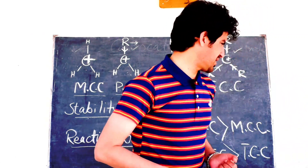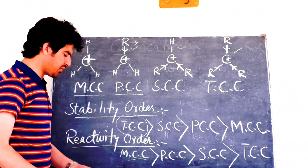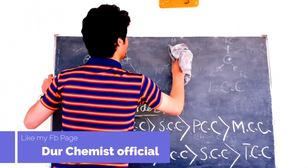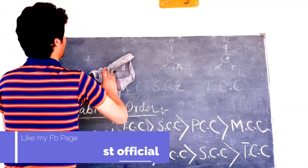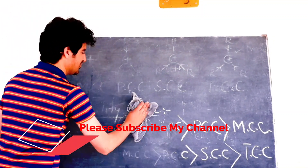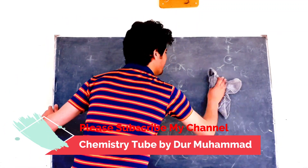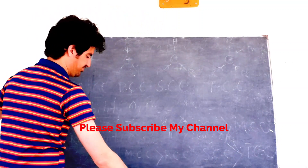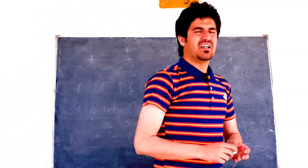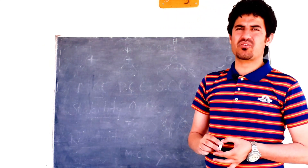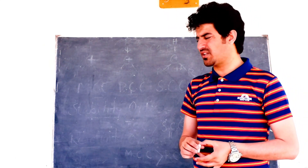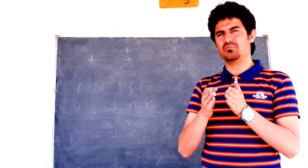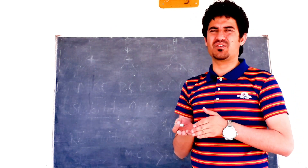This case we can understand — I will clear the picture. This question is wrong: if the tertiary carbocation is most stable, then why is it more reactive?